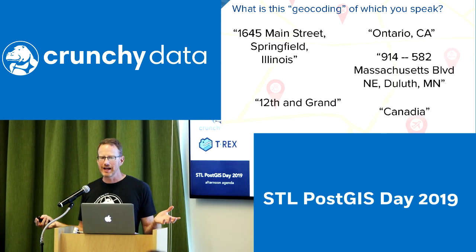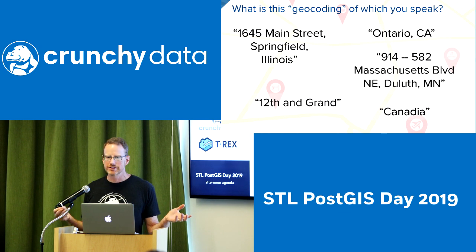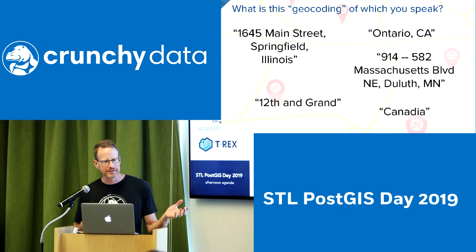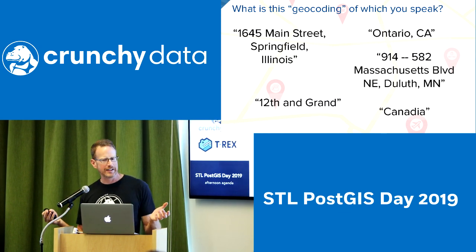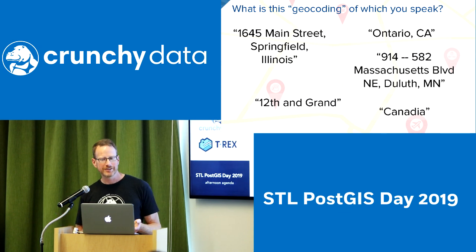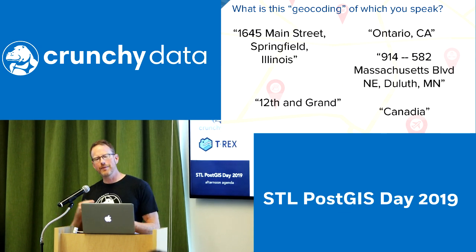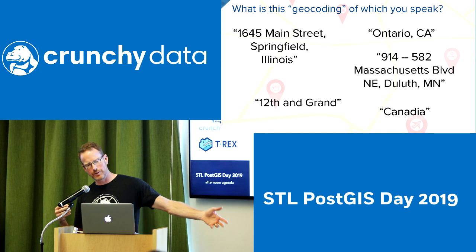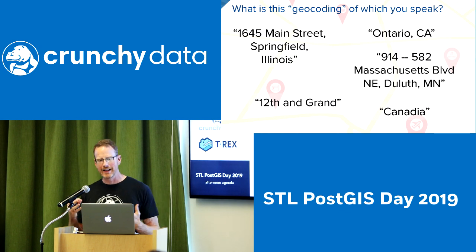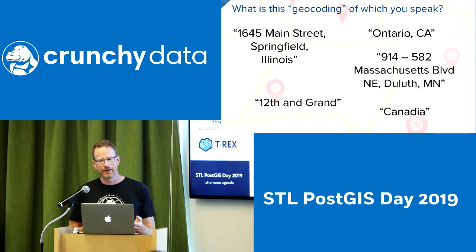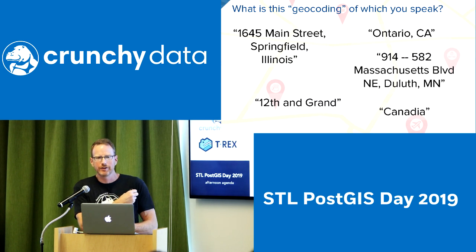By description, I mean things like this. These are all valid descriptions of locations at various scales and various levels of accuracy. Some have enough context to get down to where they actually are. Some are lacking context — 12th and Grand could be a number of places. Ontario CA could be either in California or Canada.